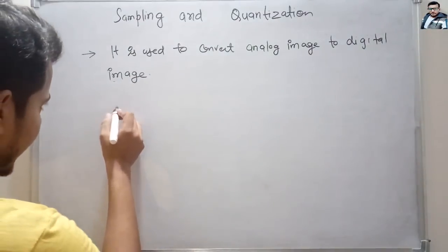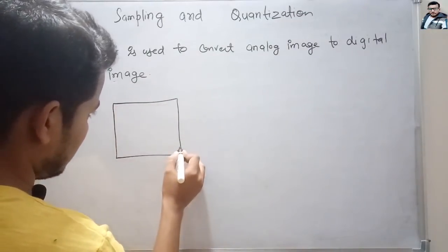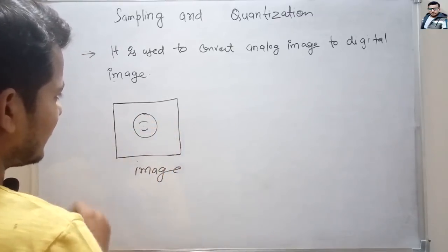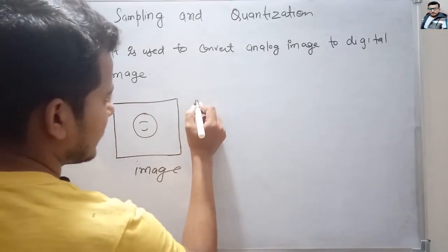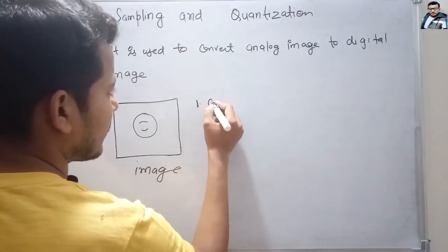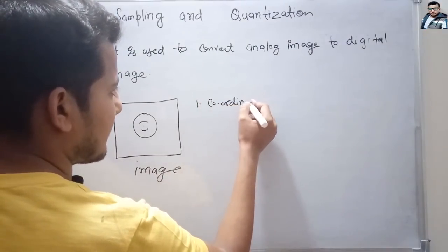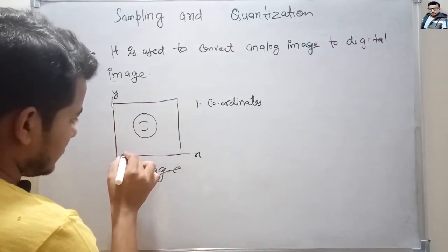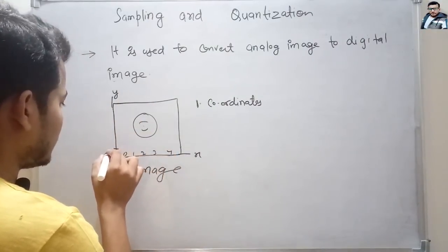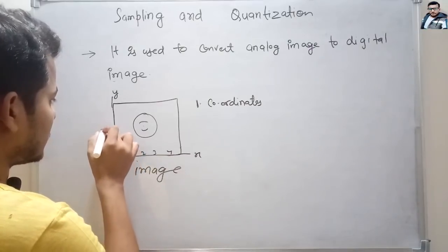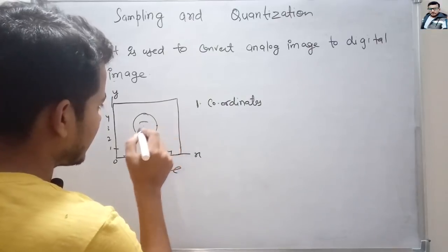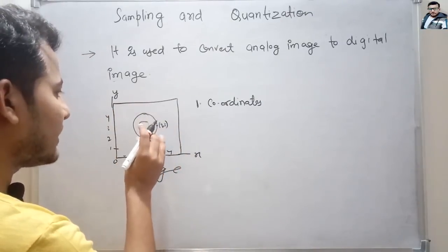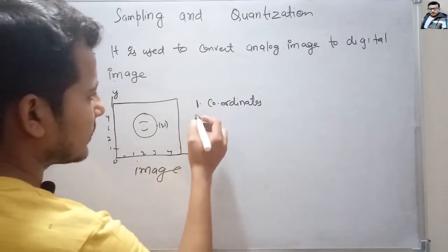In an analog image, suppose we have an image like this — it includes two things. The first is coordinates. Suppose this is the x-axis and this is y, with values 0, 1, 2, 3, 4. We can say the coordinate of a point is 3 comma 3, and so on for every point in the image.